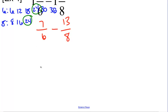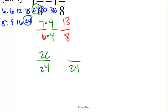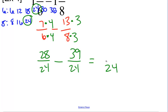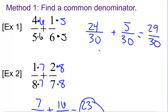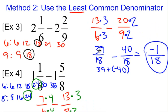To get from 6 to 24, we multiply by 4. Whatever we do to the denominator, we have to do to the numerator, so 7 times 4 is 28. To get from 8 to 24, we multiply by 3, so 13 times 3 is 39. Subtract — denominator stays the same at 24. 28 minus 39: keep, change, opposite — we get negative 11. So our answer is negative 11 twenty-fourths. Whatever method you want to use, you have to find a common denominator, whether by multiplying the opposite denominator or finding the least common denominator — it's up to you.